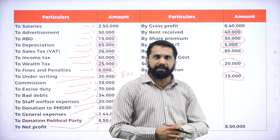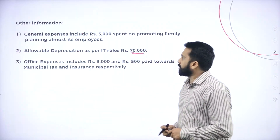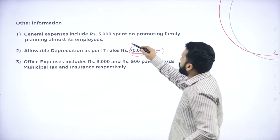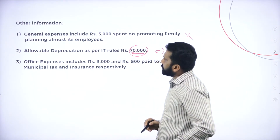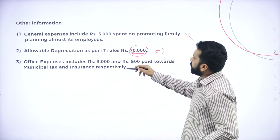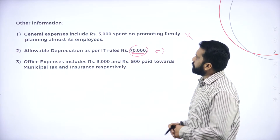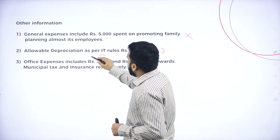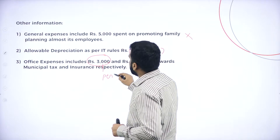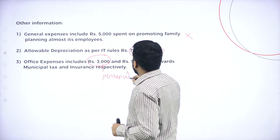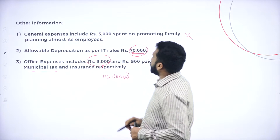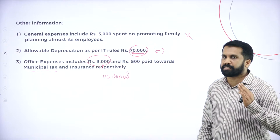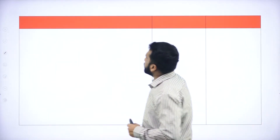We'll do our normal calculation. Depreciation — as you know, we are supposed to minus. And general expenditure 5,000 spent on promoting family planning — we don't consider. Office expenses including 3,500 paid towards municipal tax and insurance — insurance is a part of business, but 3,000 is personal, because of the municipal tax. So we are supposed to take only 3,000 out of office expenses.